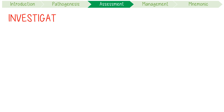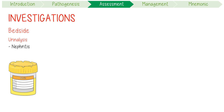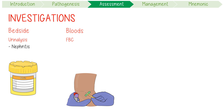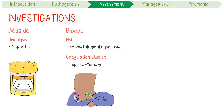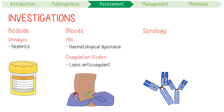For investigations, let's focus on some core initial tests. First, bedside tests like urinalysis to screen for nephritis. Next, blood tests: a full blood count might demonstrate hematological dyscrasias, and a coagulation screen would indicate the presence of lupus anticoagulant. Finally, and probably the most important, let's discuss serological investigations.